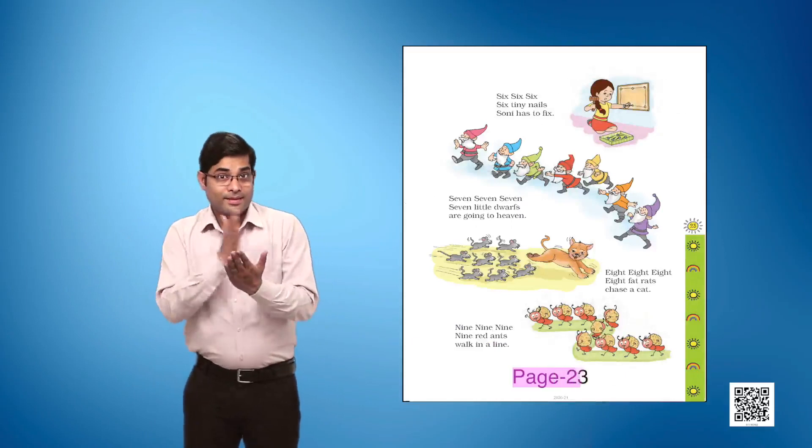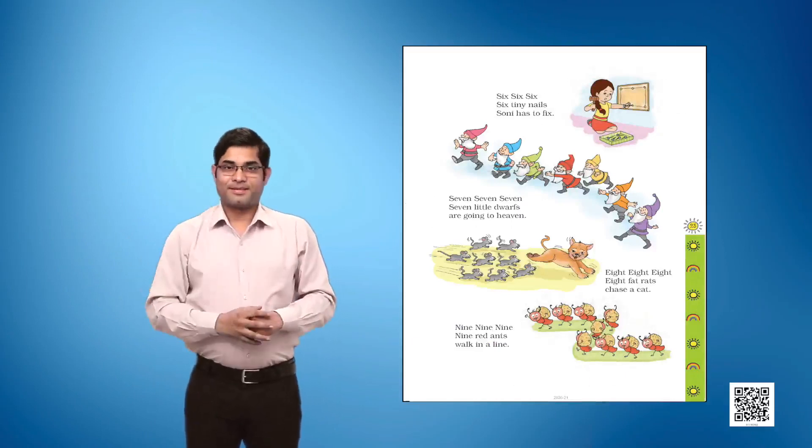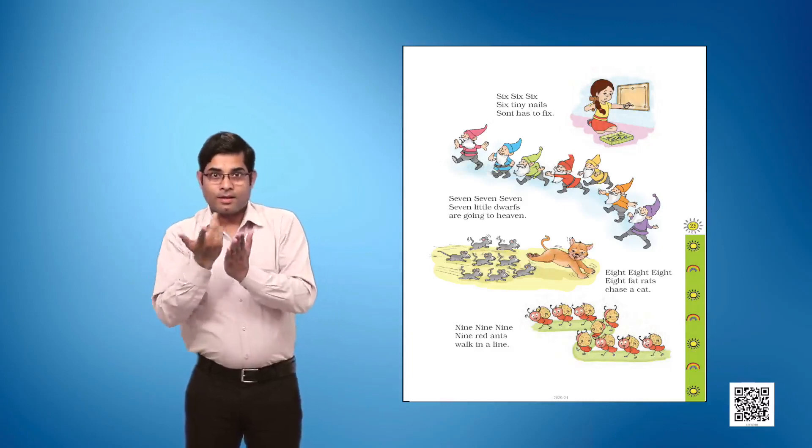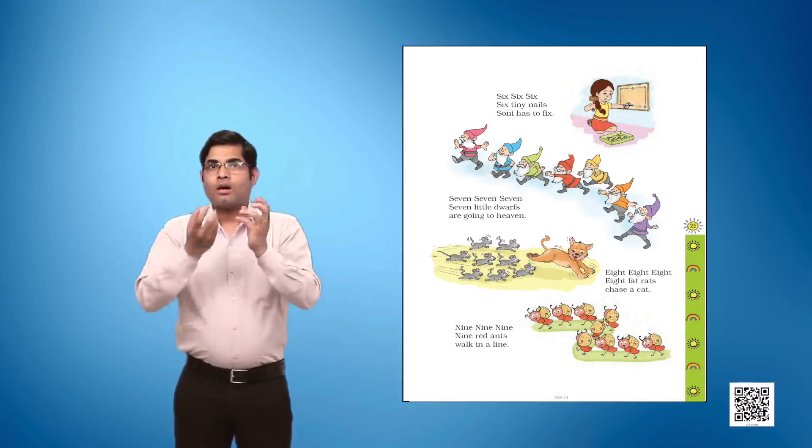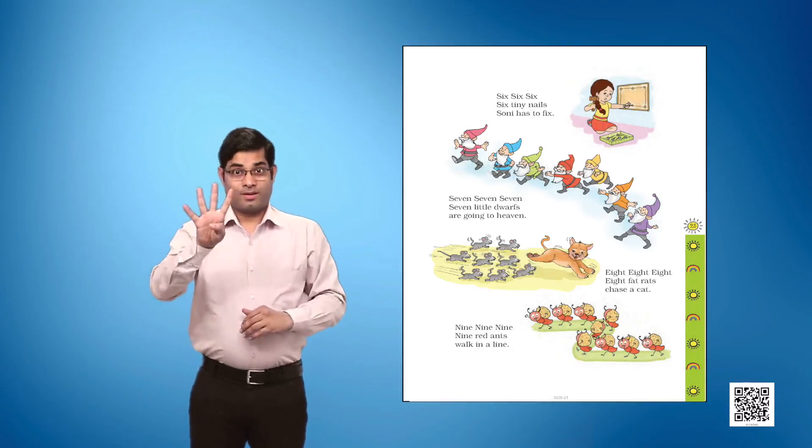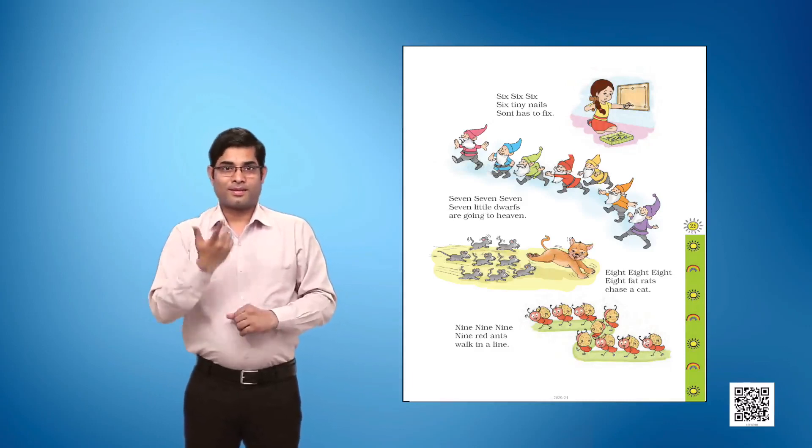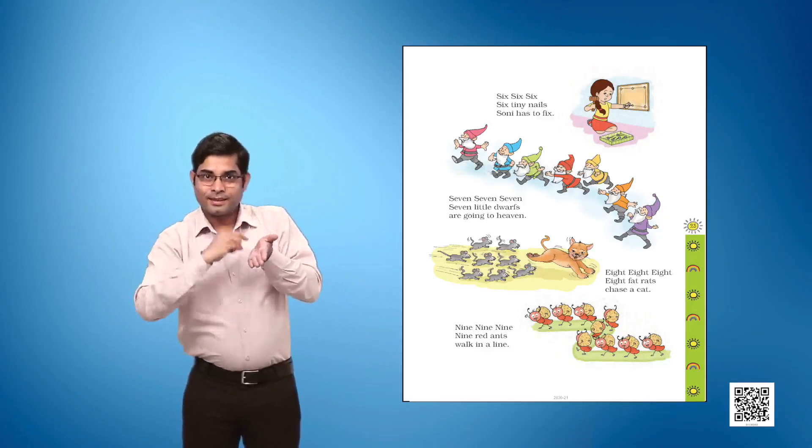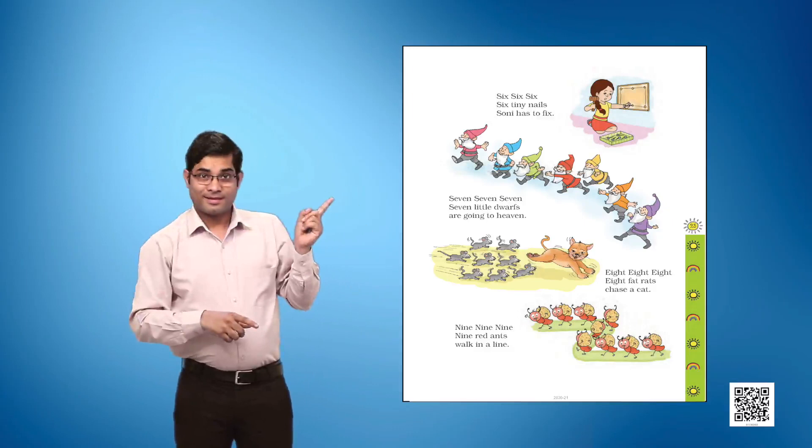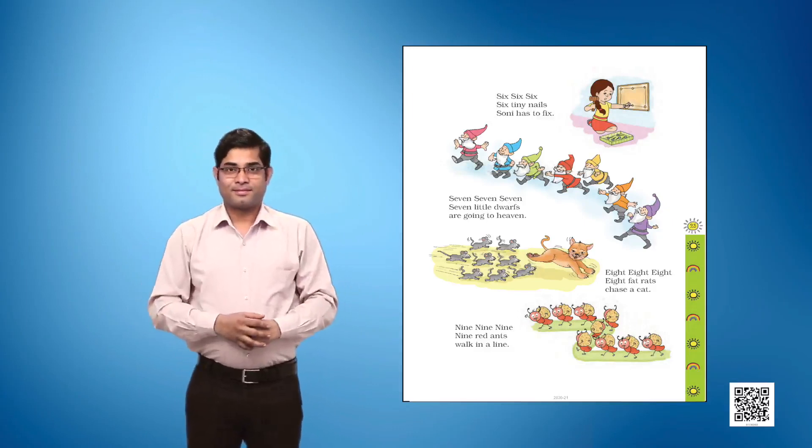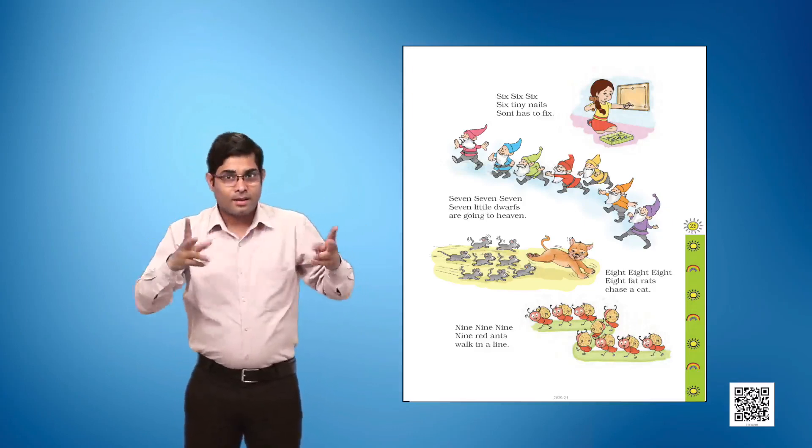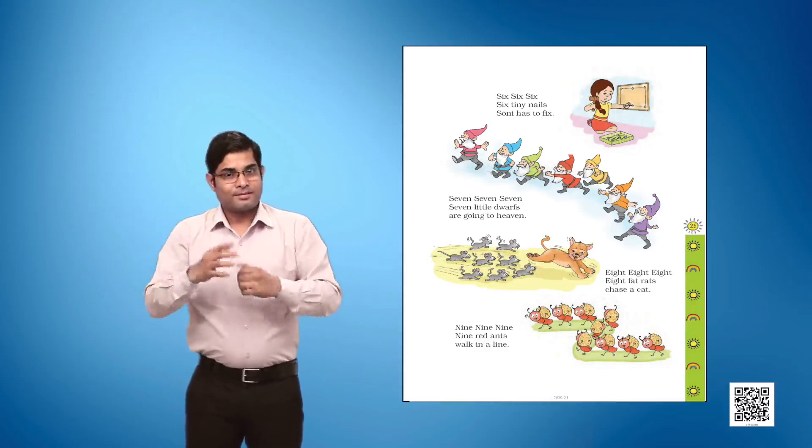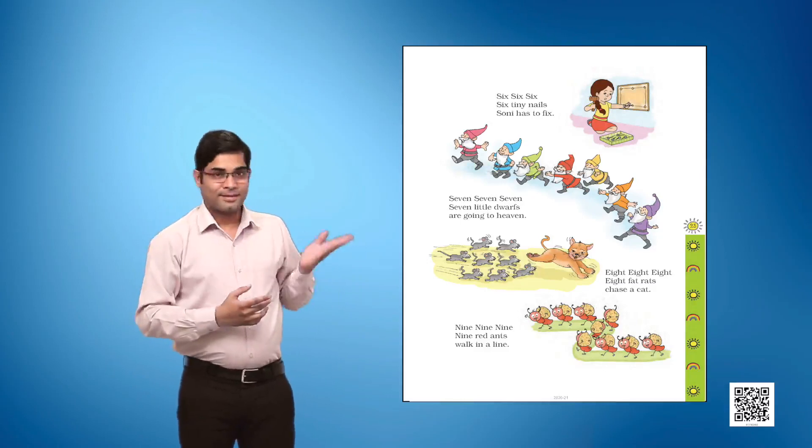Page 23. This page has been divided into five parts. Each part has a picture and some text. Before beginning to read this page, let's become familiar with animals, objects, persons, and places mentioned on this page.